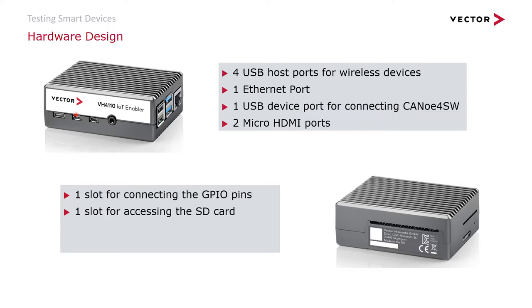On the back of the IoT Enabler, you can find one slot for connecting to the GPIO pins. There is also one port for accessing the SD card — for example, if you want to flash a new firmware image to the IoT Enabler.